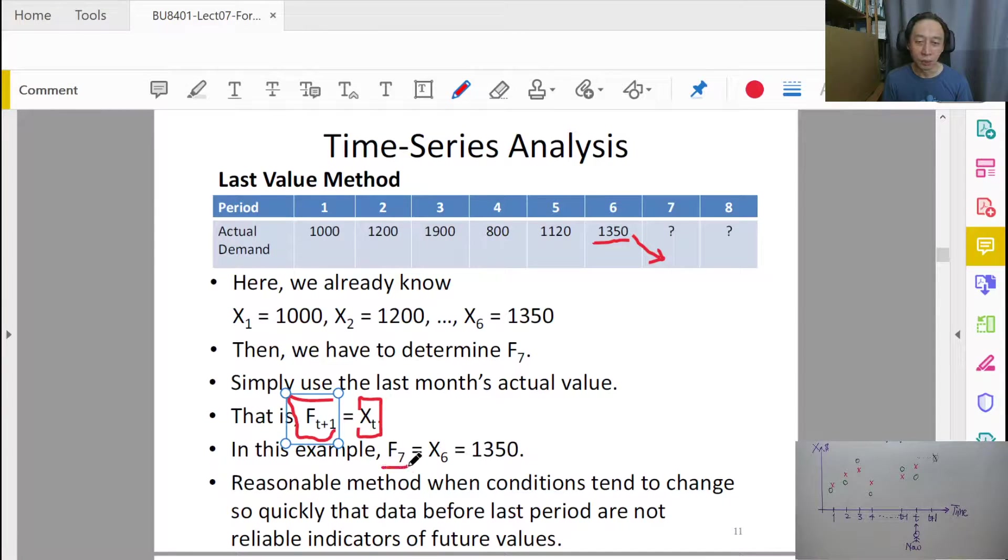We'll copy and paste it and that becomes our next forecast. Our next forecast, F_7, before X_7 arrives. Keep that in mind. X_7 is something we don't know yet but we very much want to know. So we come up with F_7. Our best guess is that X_7 is going to be the same as 1350.